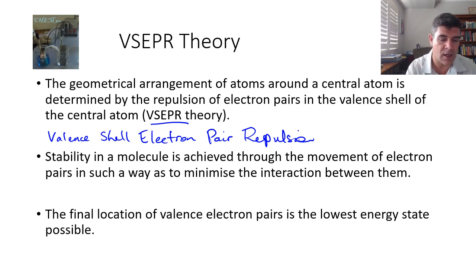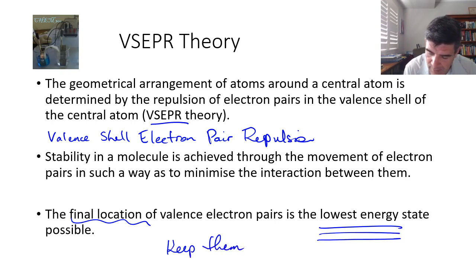Obviously in three dimensions, if they get further away from one pair of electrons, they may get closer to another pair. So we want to try and have the arrangement in space that gets them as far away from each other as possible. The final location of valence electron pairs is at the lowest energy state possible.